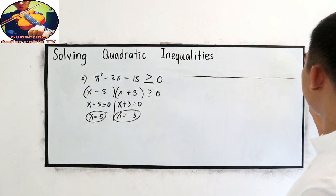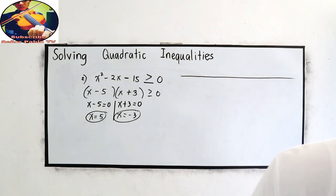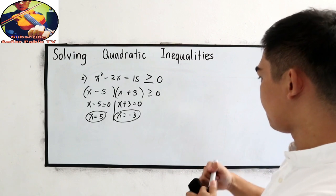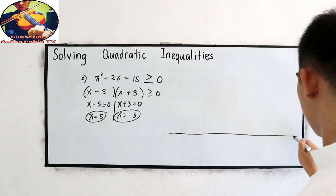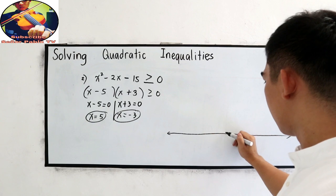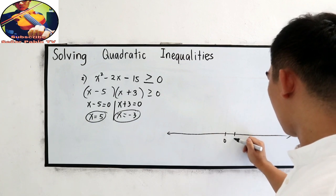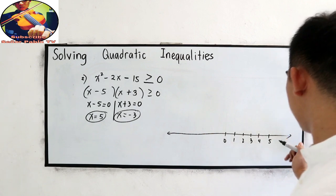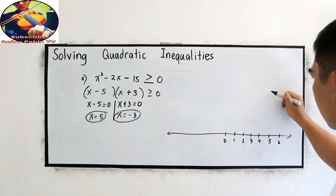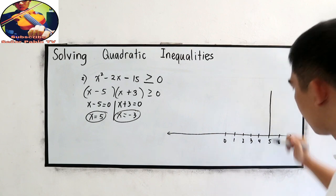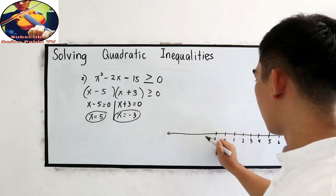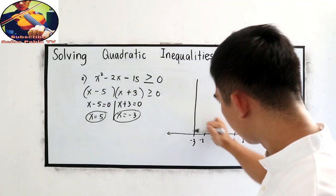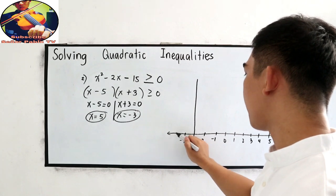Now, using our number line, locate positive 5 and negative 3. This is our number line: 0, 1, 2, 3, 4, 5, 6, and so on. So positive 5 and negative 3. Negative 1, negative 2, negative 3. Then negative 4, negative 5, and so on.